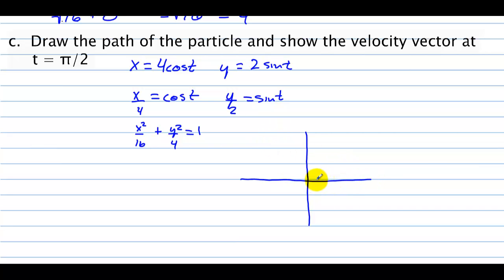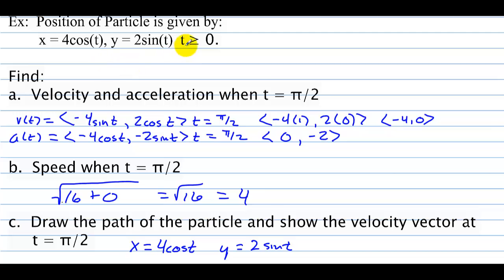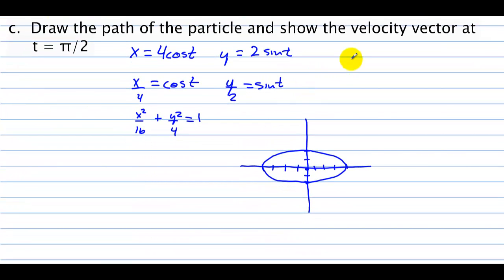To draw the ellipse: go right and left 4 units, and up and down 2 units from center 0, 0. The particle starts at t = 0: cosine of 0 is 1 and sine of 0 is 0, giving starting point 4, 0.